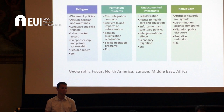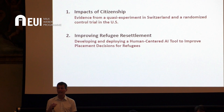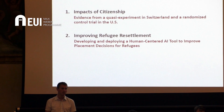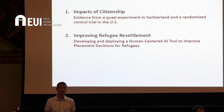In this keynote I'm going to dive more deeply into two multi-year research streams. The first looks at the impact of citizenship: does it actually make a difference if immigrants attain the citizenship of the host country? We'll examine this using a quasi-experimental study in Switzerland and then a randomized experiment recently finished in the United States. In the second part I'll focus on refugee resettlement and talk about our efforts to develop and deploy a human-centered artificial intelligence tool to help improve placement decisions for refugees.